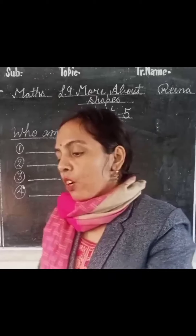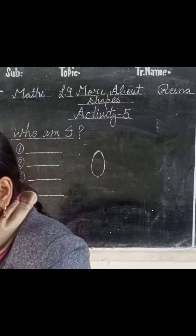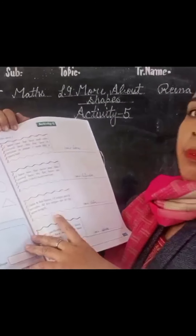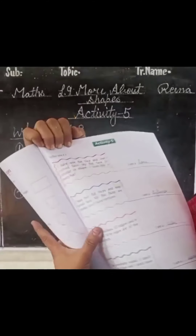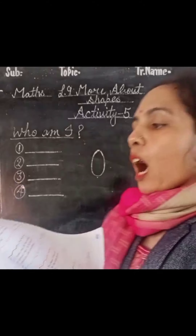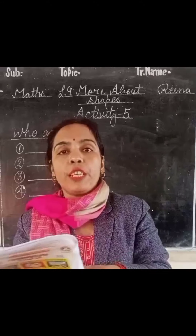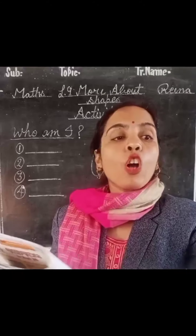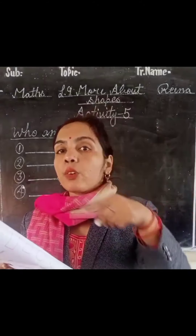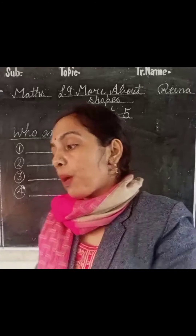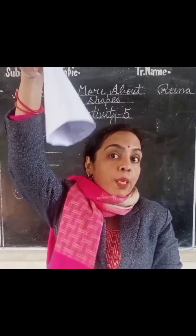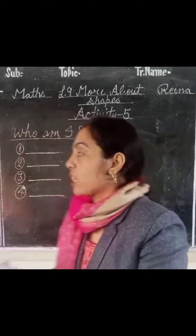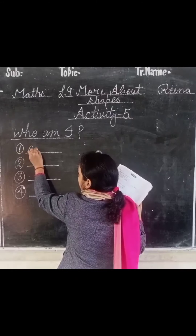Now the next activity is based on your lesson — we will look at some solid shapes. The activity is called 'Who Am I?' In the first question: I have one flat face and one curved face. My flat face is circular in shape. I look like a party hat. So the answer is a cone, because a birthday cap has one curved face and one flat circular face.